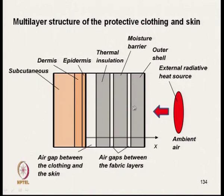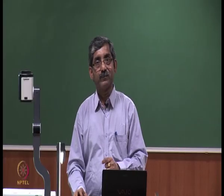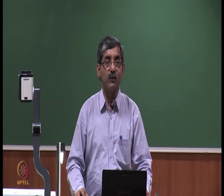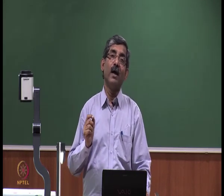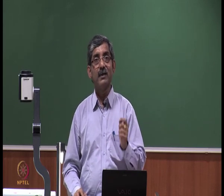In the schematic diagram of the multi-layer structure of protective clothing, the red source represents an external radiative heat source such as flame or fire. The protective clothing (shown in grey) has three layers: outer shell, moisture barrier layer in the middle, and thermal insulation. Air gaps between the layers also help provide insulation. The space between the clothing and the skin is called the microclimate. From epidermis, dermis, and subcutaneous tissues, we can predict the heat transmitted to the epidermis and the second degree burn time.